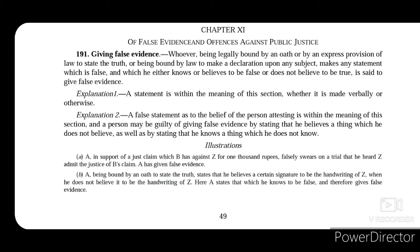Now let's move through this chapter and understand these offences. First, Section 191 talks about giving false evidence — it defines it. It says that when a person who is legally bound by an oath to state the truth makes any statement which is false, it can be said that he has given false evidence.